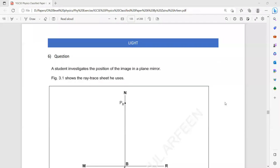So question 6 again related to the light experiment and a student investigating the position of the image in a plane mirror. Look, there are two ways to do such experiment.